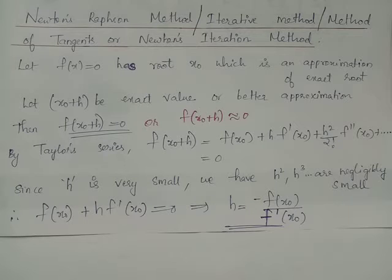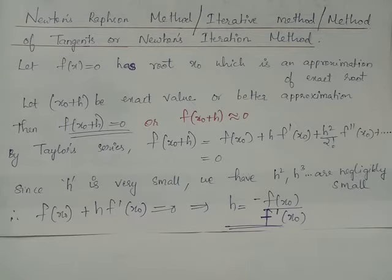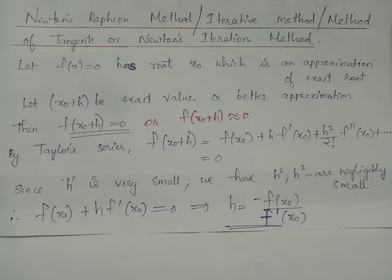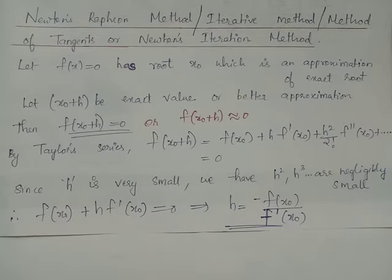The Newton-Raphson method helps us find the root of f(x) = 0 using the Newton-Raphson formula, which is given by x_(n+1) = x_n - f(x_n) / f'(x_n). This is also known as Newton's formula. We can obtain this formula using the Taylor series expansion.